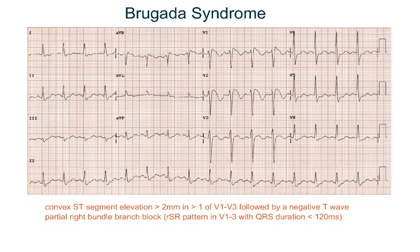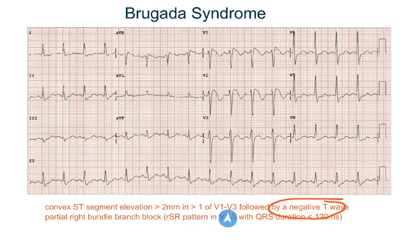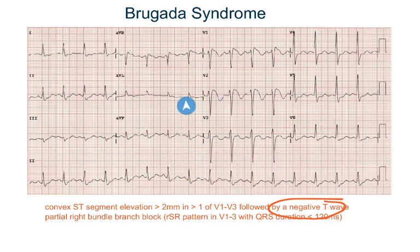In Brugada syndrome, you will also find T wave inversion in leads V1, V2, and V3. But you will also find convex ST segment elevation of more than 2 millimeters in more than one of V1 to V3. In this ECG, the ST elevation is in V1 and V2, not in V3. Also, you will find partial right bundle branch block, meaning an RSR pattern in V1, V2, and V3, but the QRS is not broad as in complete right bundle branch block.